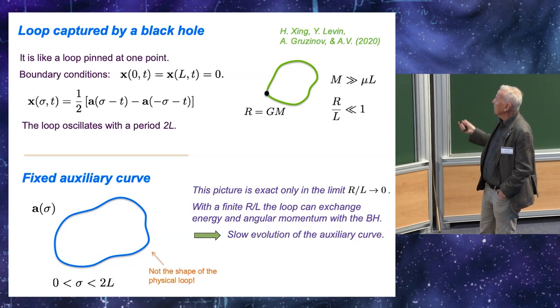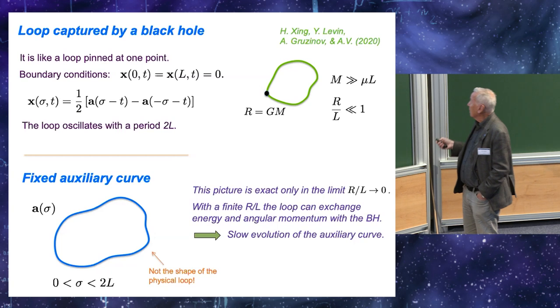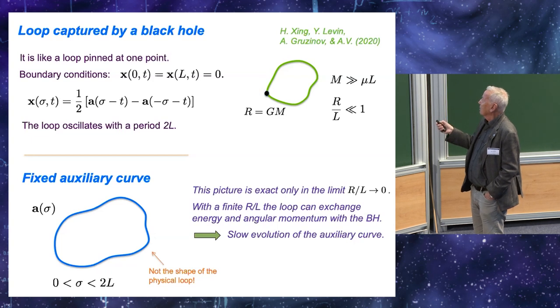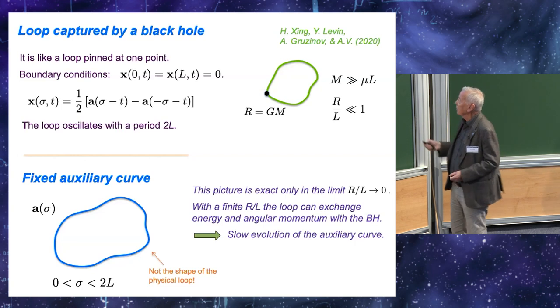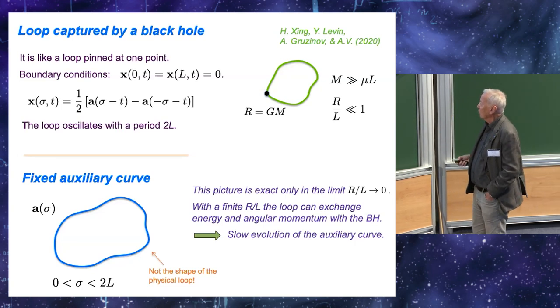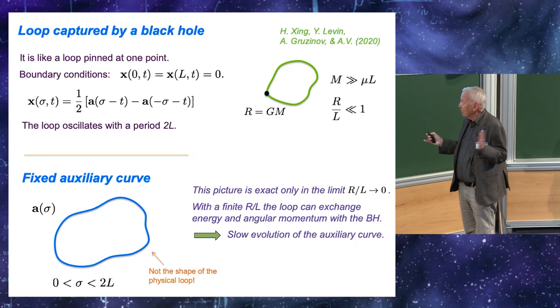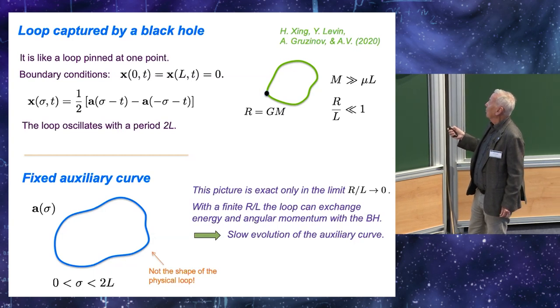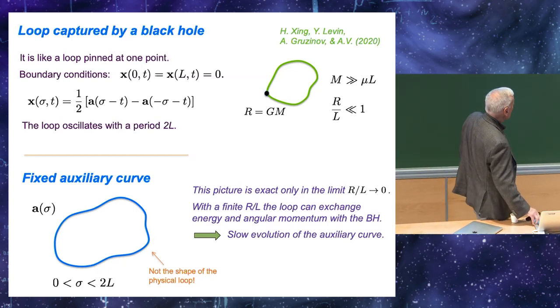This picture that I described where one point of the loop remains fixed is exact only in the limit when the size of the black hole ratio of R over L, R is the radius of the black hole, when this ratio goes to zero. When this ratio is finite, there is still some energy and angular momentum exchange between the loop and the black hole. And, as a result, this auxiliary curve, as we call it, is changing. But, it's changing very slowly, because the interaction is rather weak. It's suppressed by a power of R over L.